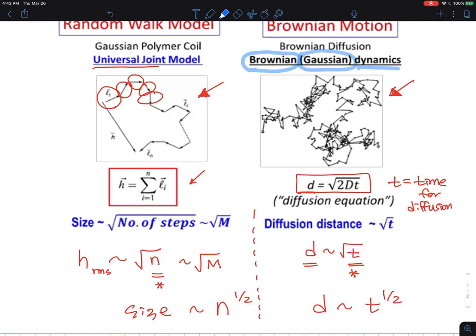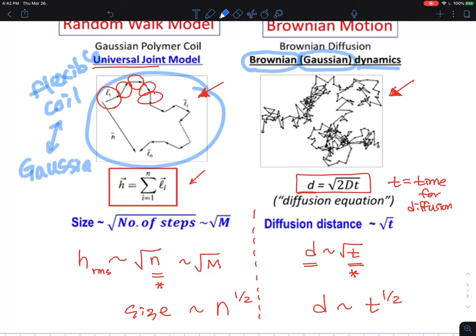And this is a polymer chain we call the flexible coil. But at the same time, people call it Gaussian chain.